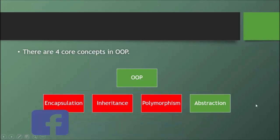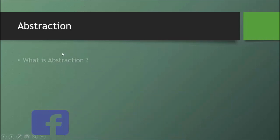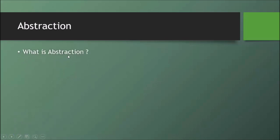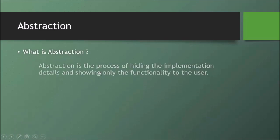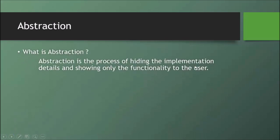The first topic is Abstraction. Abstraction is the process of hiding the implementation details and showing only the functionality to the user.